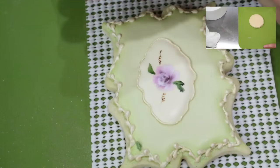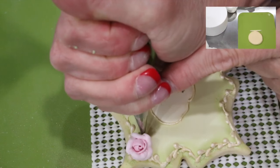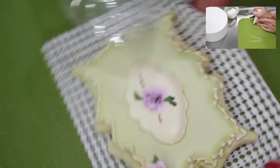Now we're going to add our roses. To see how to pipe toothpick roses, go ahead and click on the upper right hand corner.